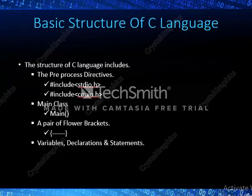Secondly, we come across the main class, where every programming language starts with a class. In the same way, C also contains a main class defined as main() with a pair of brackets. Thirdly comes the pair of flower brackets, which internally contains variable declarations and statements — in other words, the coding part.